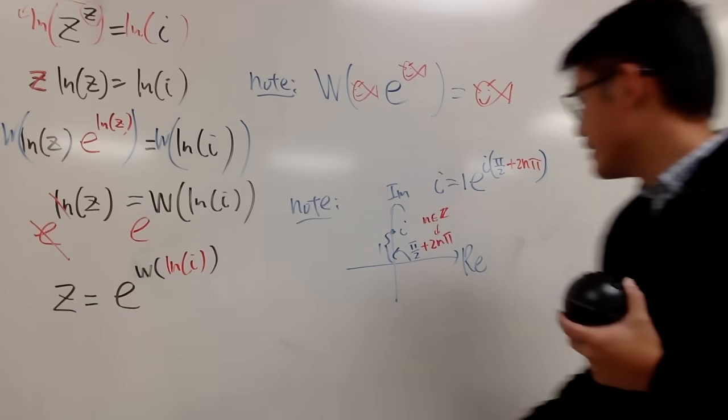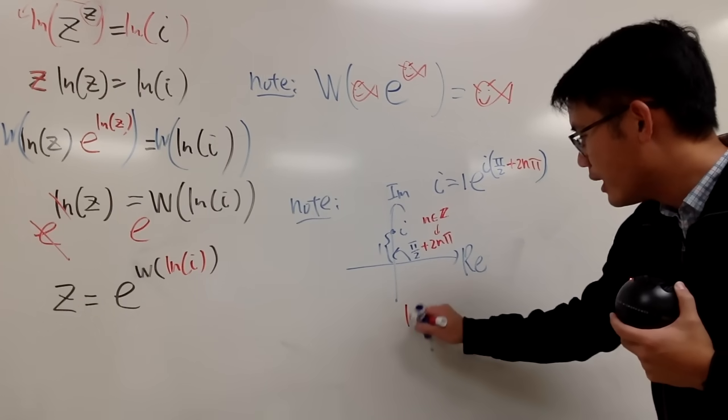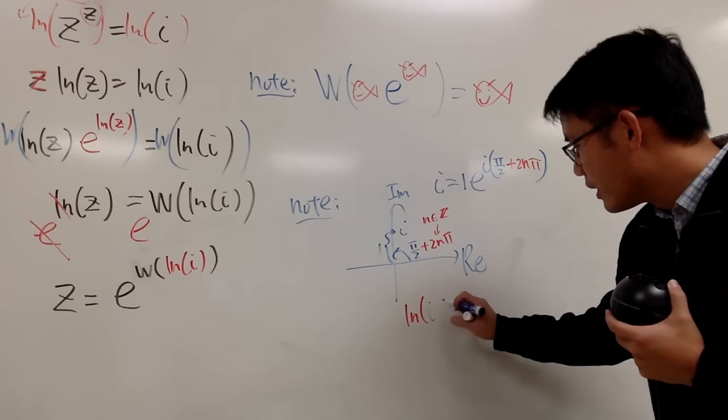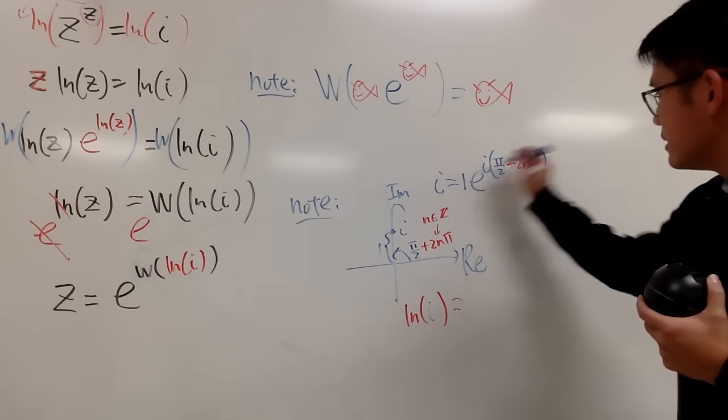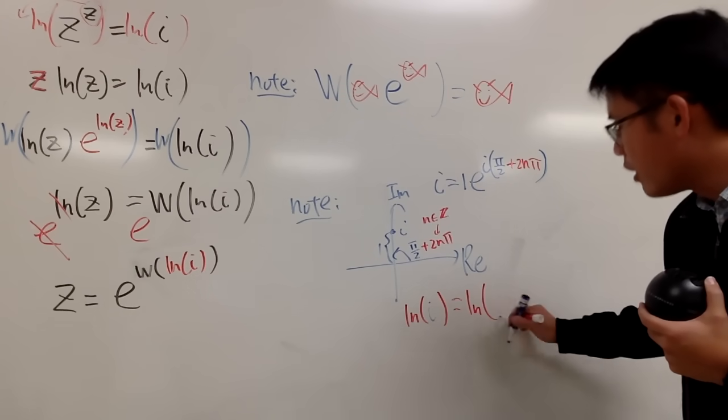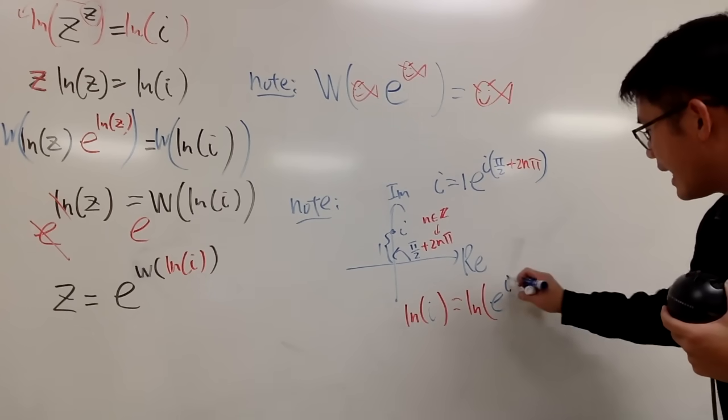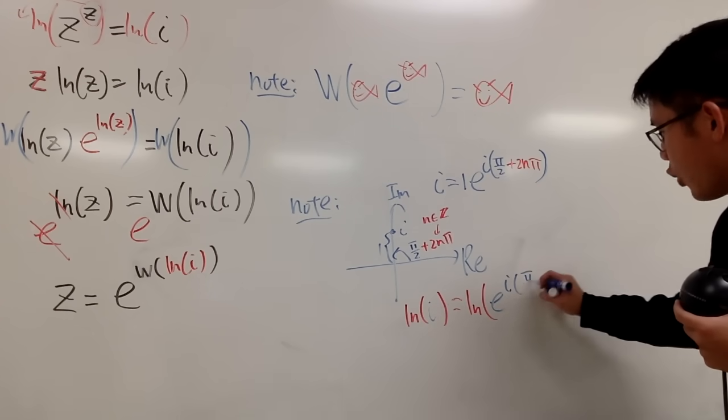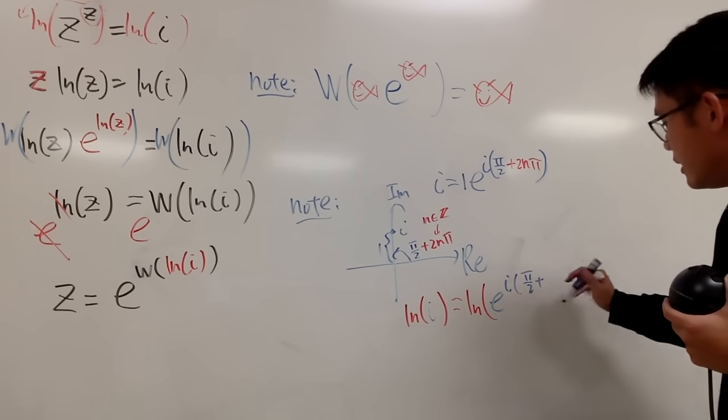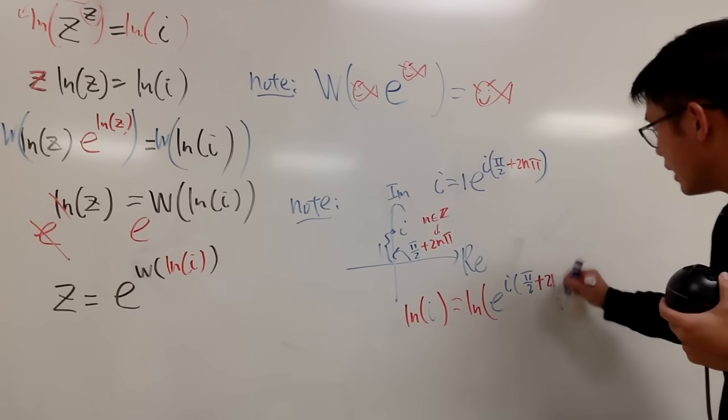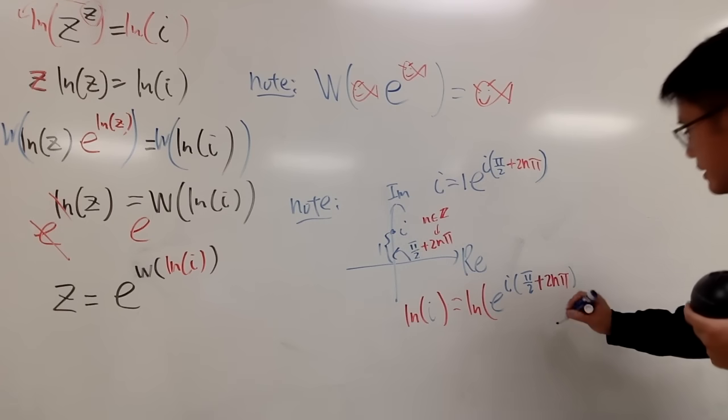Well, what is ln i then? Let me just show you. ln, of course, now i is this. So we have ln of 1 times this, which is just e, and then we have the i times π over 2, plus the 2nπ, like this.